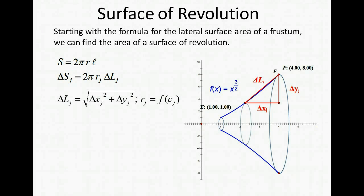We know that Δℓ can be found by using the Pythagorean theorem. And we know that the average radius is going to be approximately equal to the function evaluated at that point c.